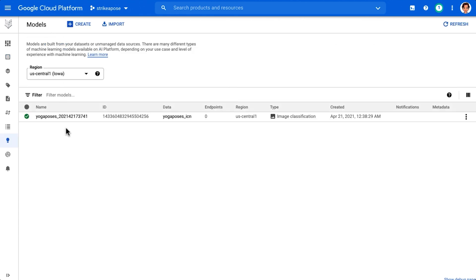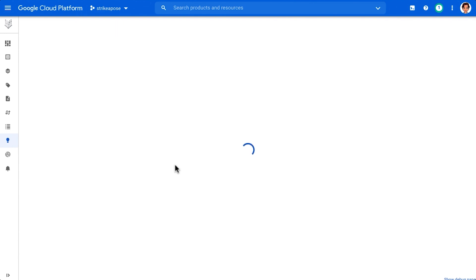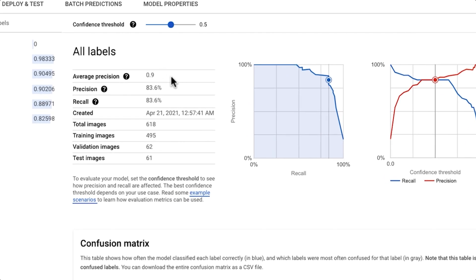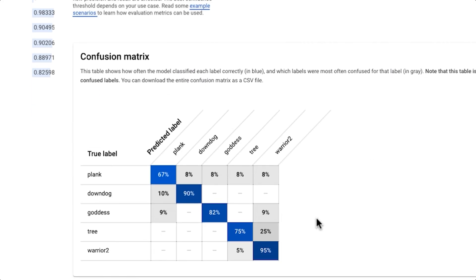Once it is trained, we see it in the model tab and can evaluate the model. We can see our model's average precision. It ranges from zero to one, where a higher value indicates a higher quality model. We can see that the confusion matrix helps us understand where our model is confusing two results.